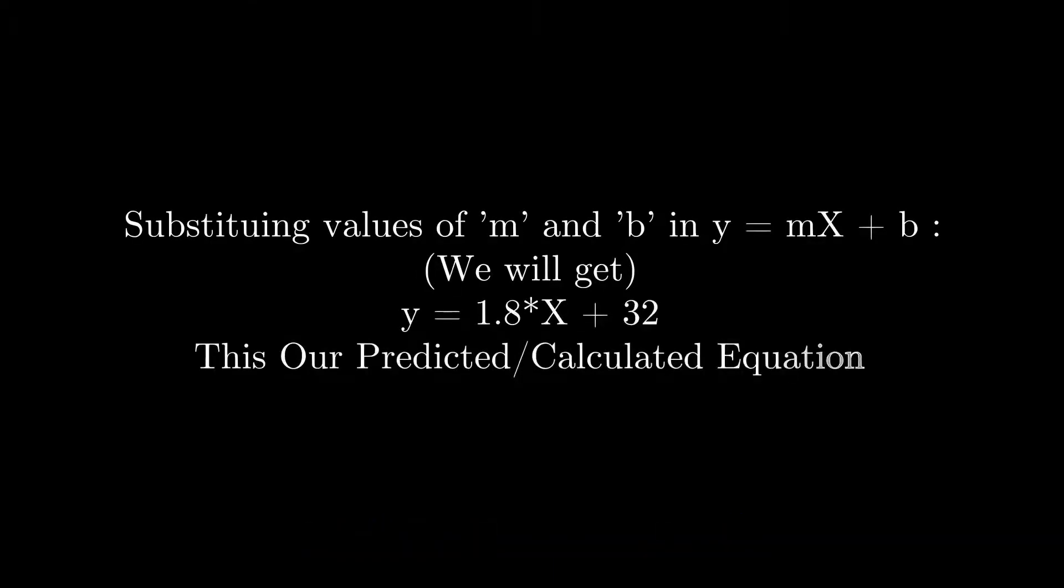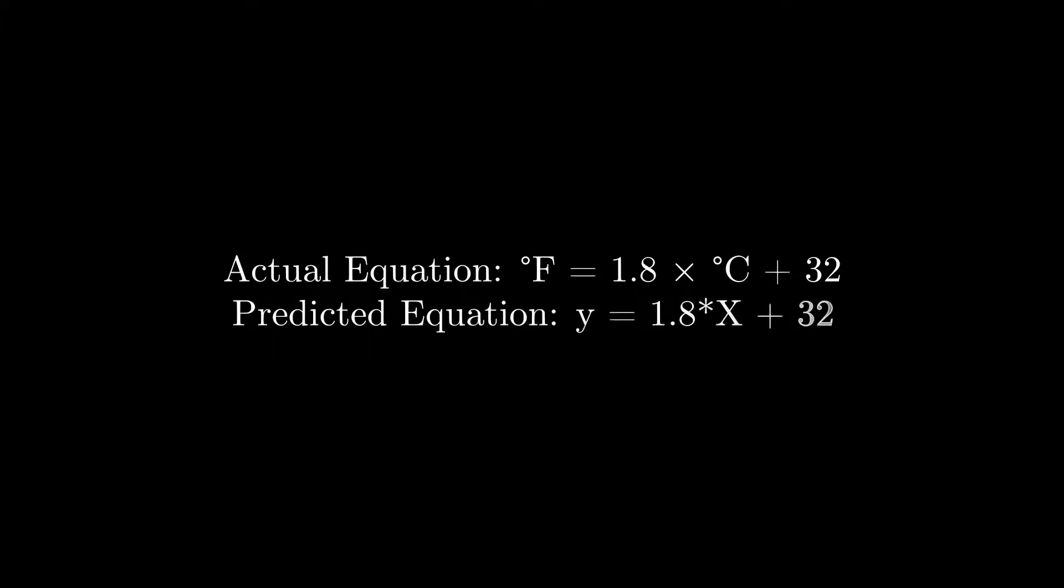Substituting this value in y equals mx plus b, which is the general formula of linear regression, ends up giving y equals 1.8 into x plus 32. This is our final calculated value. If you compare it with the actual formula, it is exactly the same.